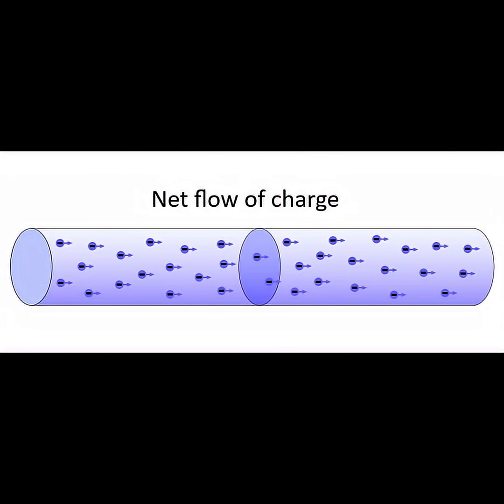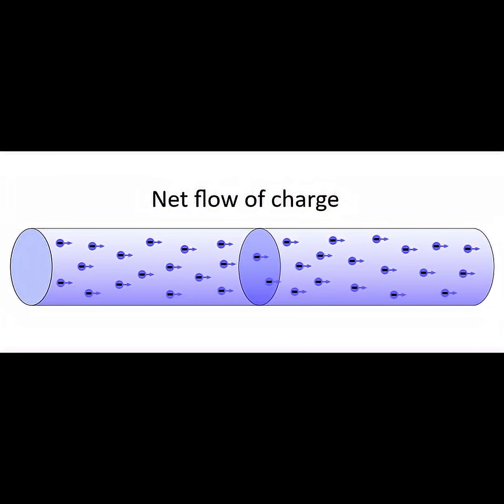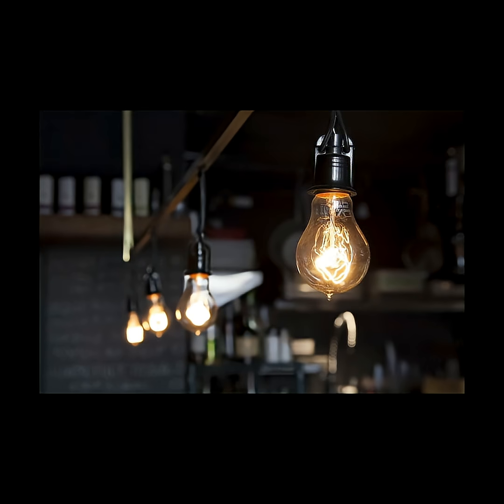Even though the actual drifting of the electrons in a direction within a metal or material is slow, the forces felt by the electrons due to the electric field happen at almost the speed of light. These forces felt by the electrons via the electric field are like a pressure that is trying to push the electrons forward in one direction. All the electrons in the conductor feel the force of the electric field almost all at once, including electrons present in the filament of a lightbulb.